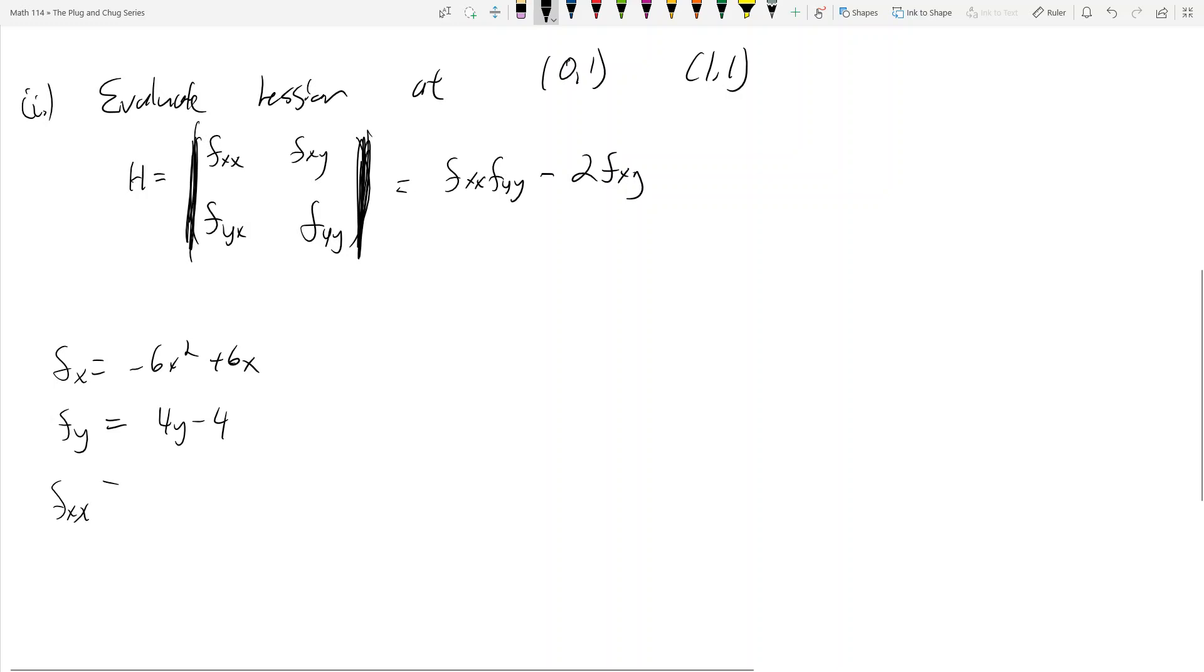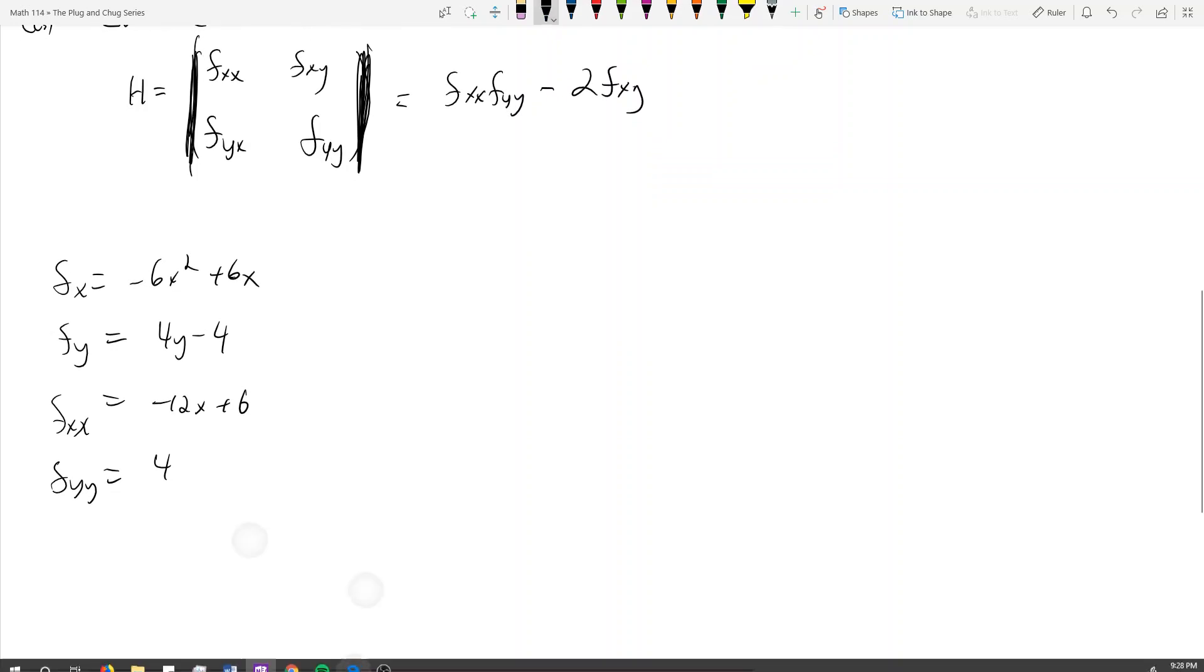And now f of xx, we need to find all these guys, all four of them. f sub xx is f sub x, take a partial with respect to x, that's negative 12x plus 6. f sub yy is 4 because it's this guy with respect to y. And then f sub xy, I take this guy, I take the partial with respect to y. There's no y there, so that's just equal to 0.